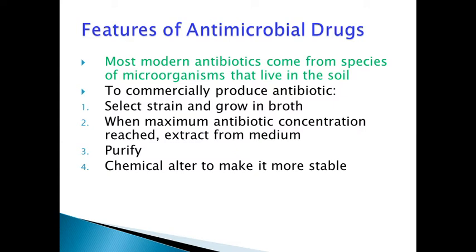The features of antimicrobial drugs: most modern antibiotics come from species of microorganisms that live in the soil, because soil is teeming with microorganisms and we can see a vast diversity of them there. But to commercially produce an antibiotic, we must select a strain and grow it in broth. The strain must be able to produce antibiotics; when the maximum antibiotic concentration is reached, we extract the antibiotic from the medium, purify it, and it may be chemically altered to make a more stable antibiotic. After passing various quality control checks, it can be given as a medicine.